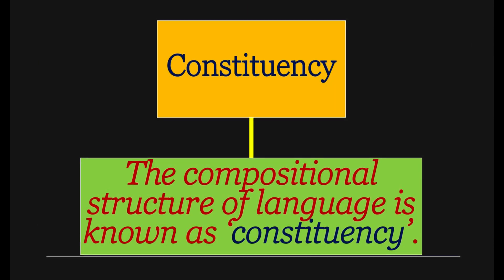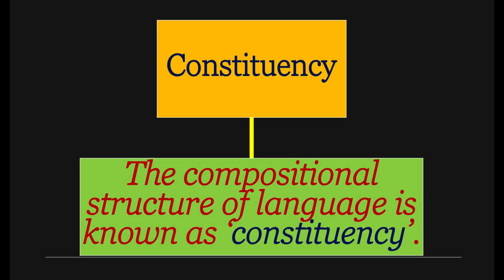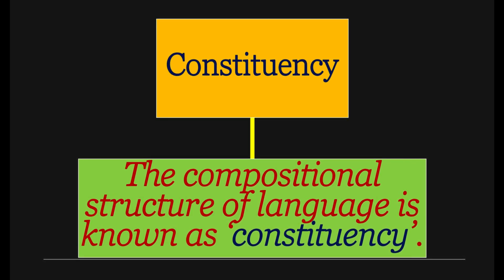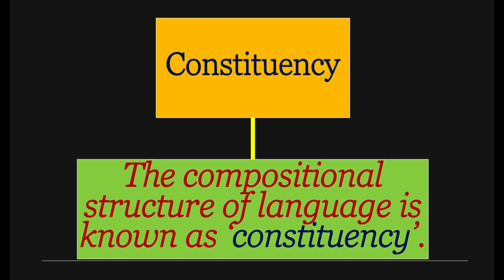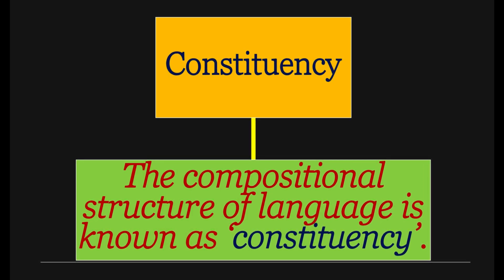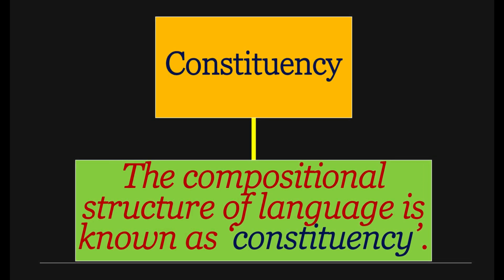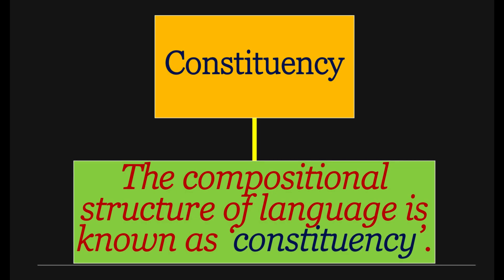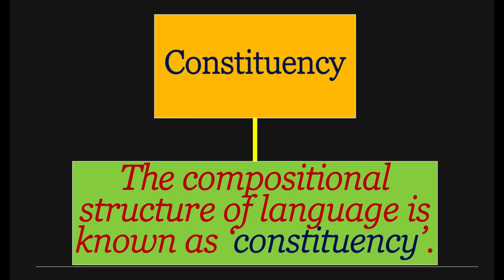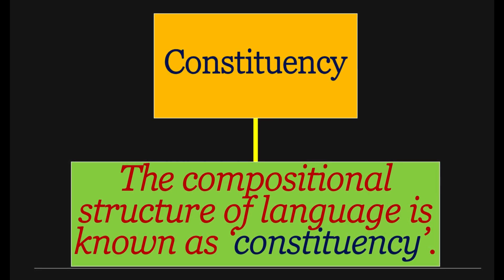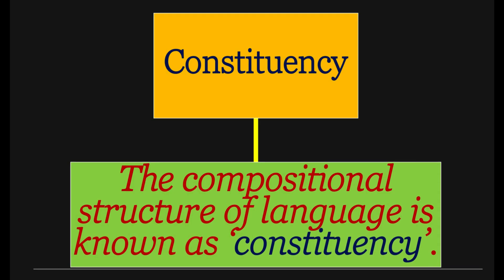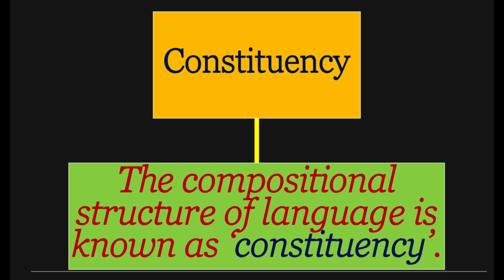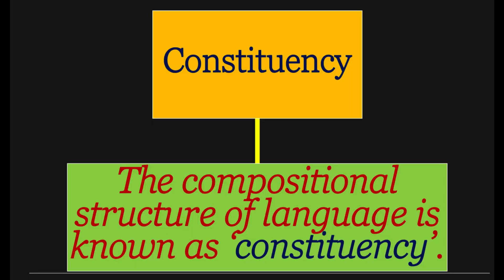Constituency. What is Constituency? We talked about this in the very beginning of our discussion. Constituency here is the compositional structure of language — how a text is composed, what is its structure, what is its hierarchy, what is its level. That level, hierarchy, and structure is known as Constituency.